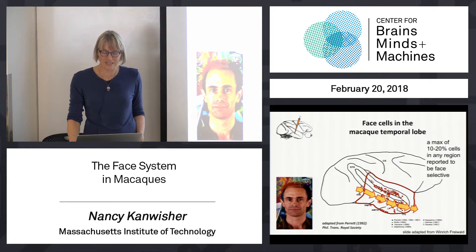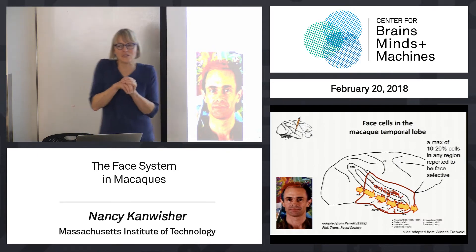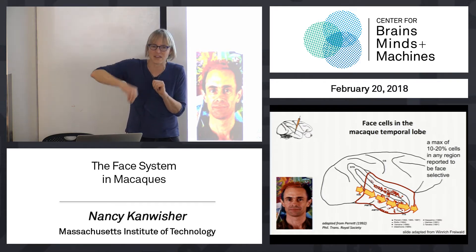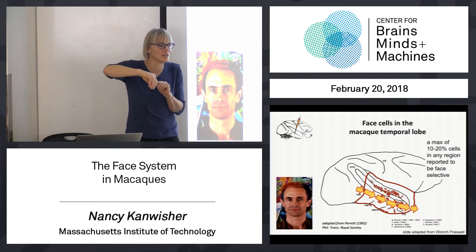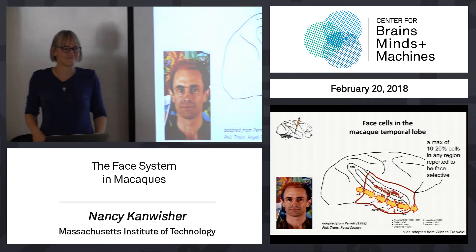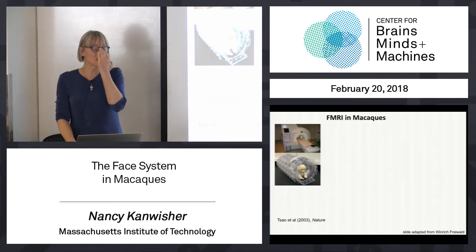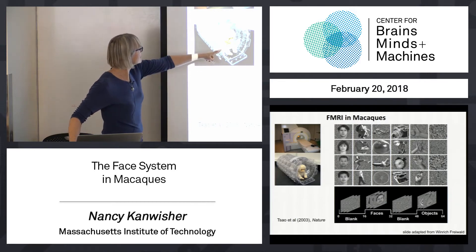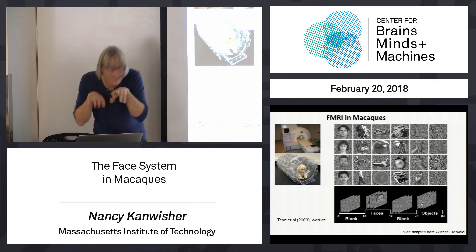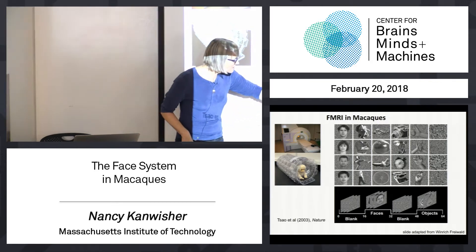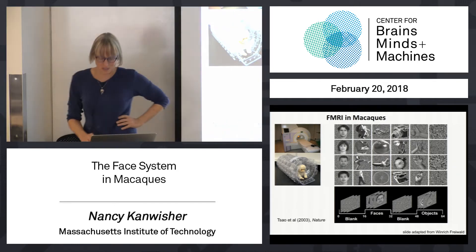But of course when you do single-unit recording with an electrode, you're just kind of sticking it in where somebody else said might be good. You're sampling one location at a time. It's easy to miss the goods, and these guys missed the goods — that's why they thought the highest density was 10 to 20 percent. What Dorit and Winnrich did was to do functional MRI experiments in monkeys, just like we do in humans. They put the monkeys in the scanner, and they're looking at stimuli just like we humans do. They present faces and blank and objects over time to the monkeys just as we do for humans.